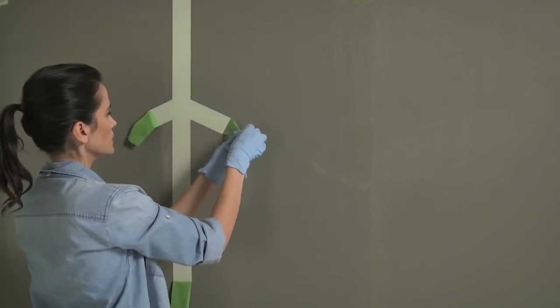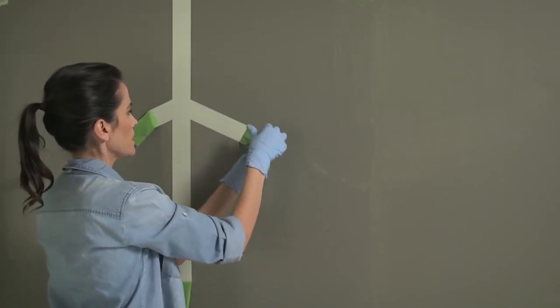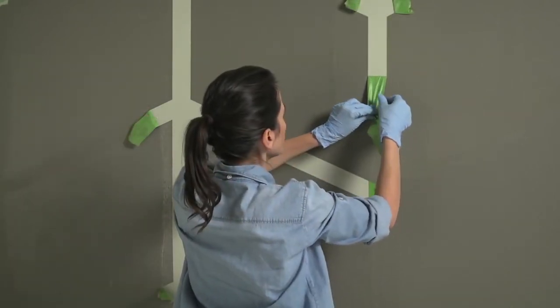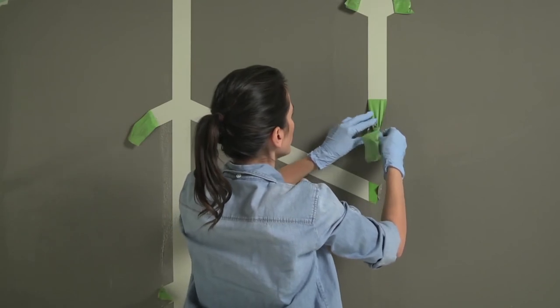Be sure to keep your hand close to the wall, pulling the tape off at a 45 to 90 degree angle. Work slowly, gently pulling off small sections of tape at a time.